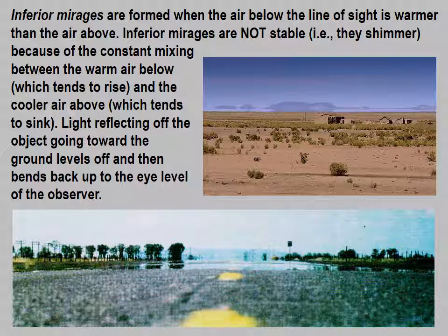Inferior mirages are formed when the air below the line of sight is warmer than the air above. Inferior mirages are not stable — that is, they shimmer — because of the constant mixing between the warm air below, which tends to rise, and the cooler air above, which tends to sink. Light reflecting off the object going toward the ground levels off and then bends back up to the eye level of the observer. This is the type of mirage with the tree, and this is what makes the road look wet — that watery-looking area is actually a shimmery image of the sky.